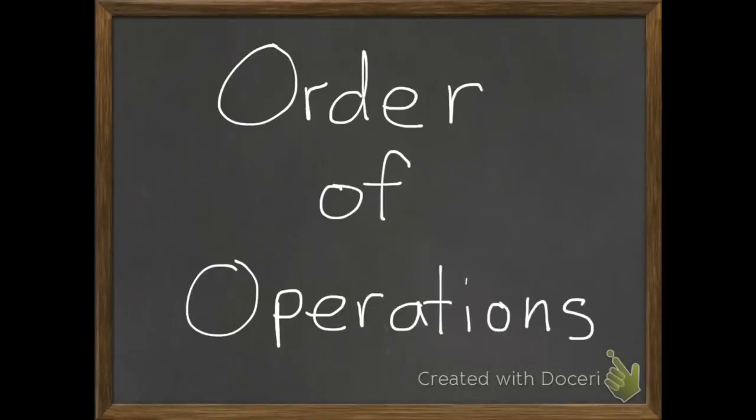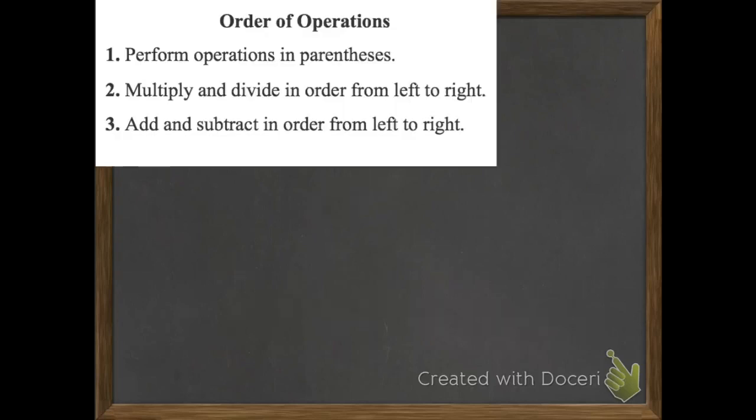Today's lesson is on the order of operations. You're going to need to know these three steps. The first step is to perform operations in parentheses. Step two is to multiply and divide in order from left to right. And last of all, step three is to add and subtract.